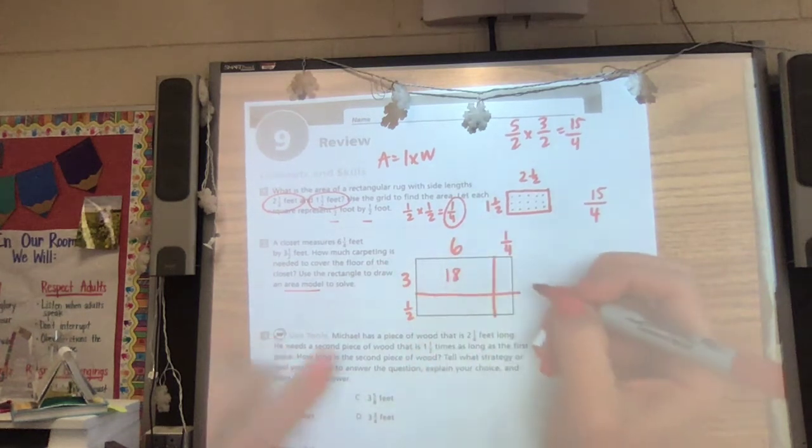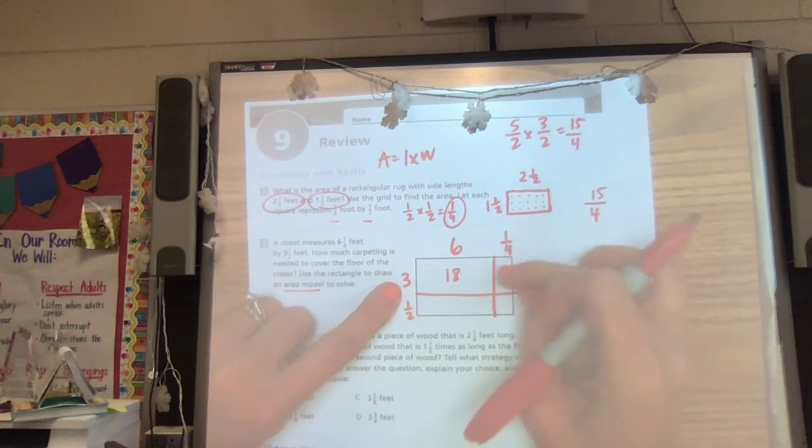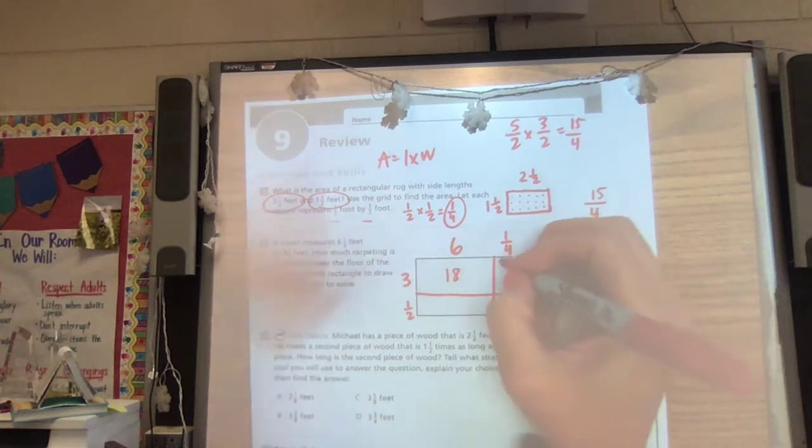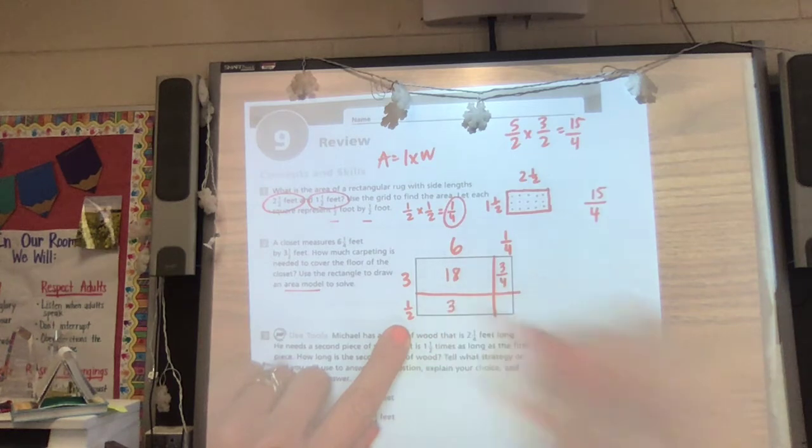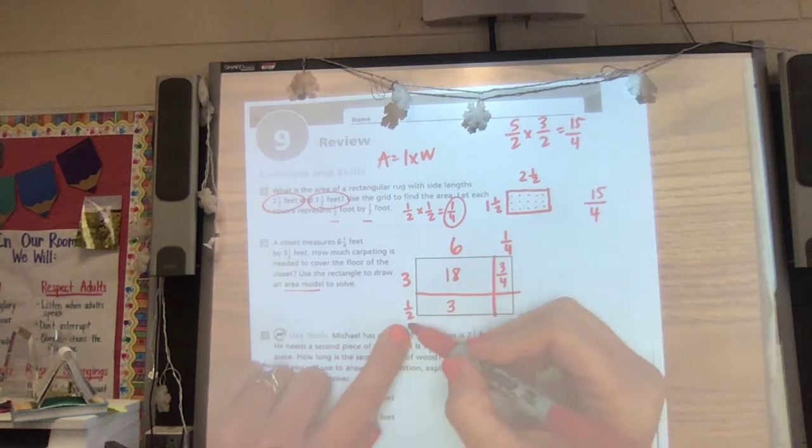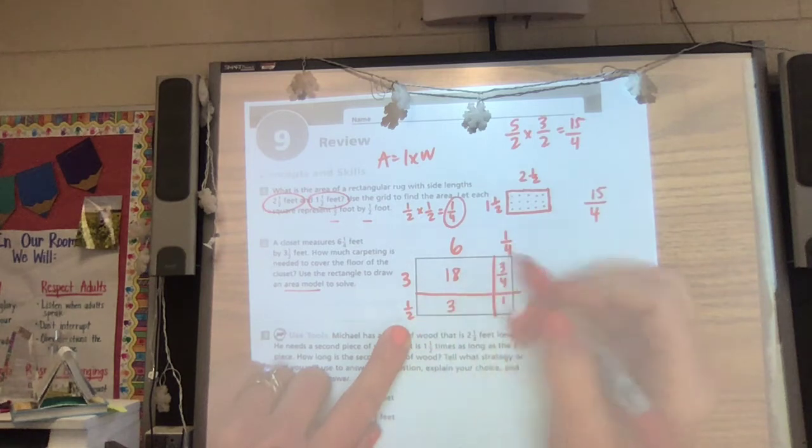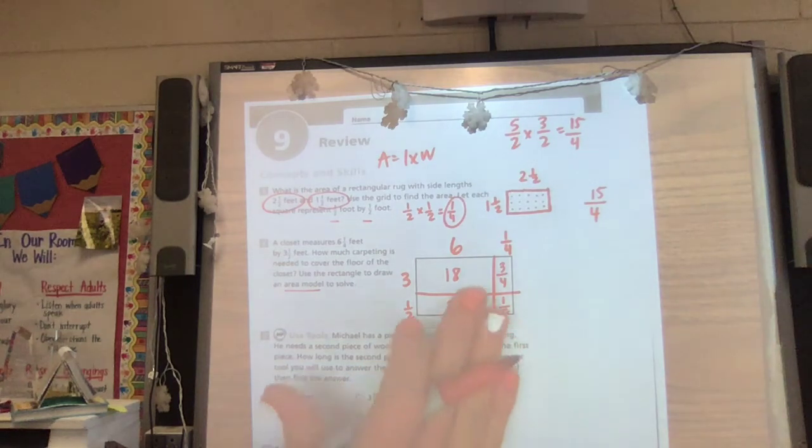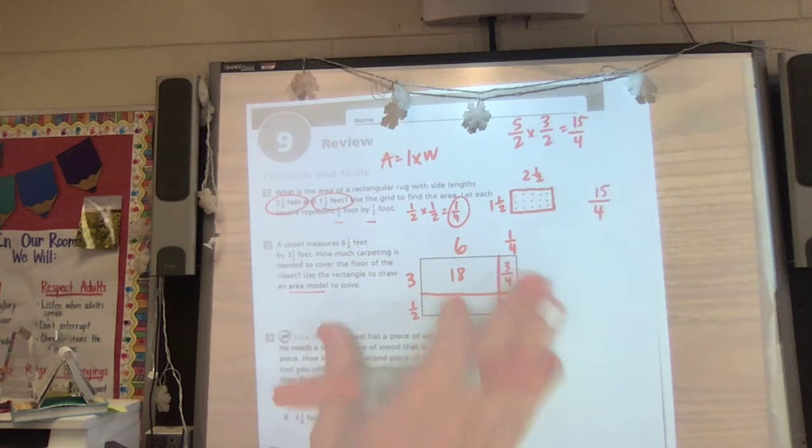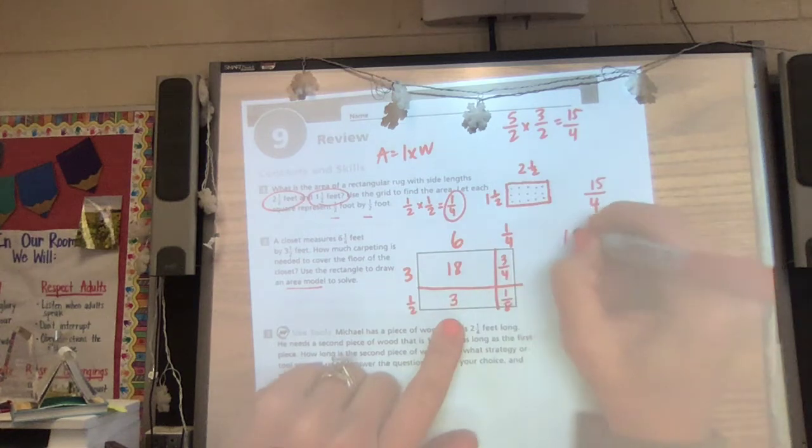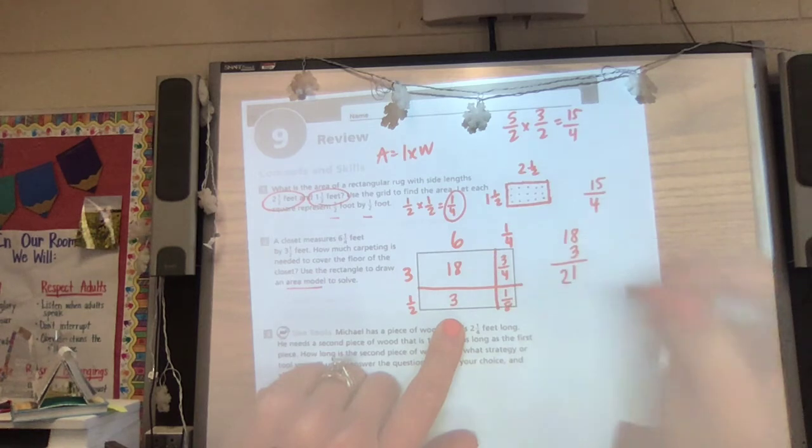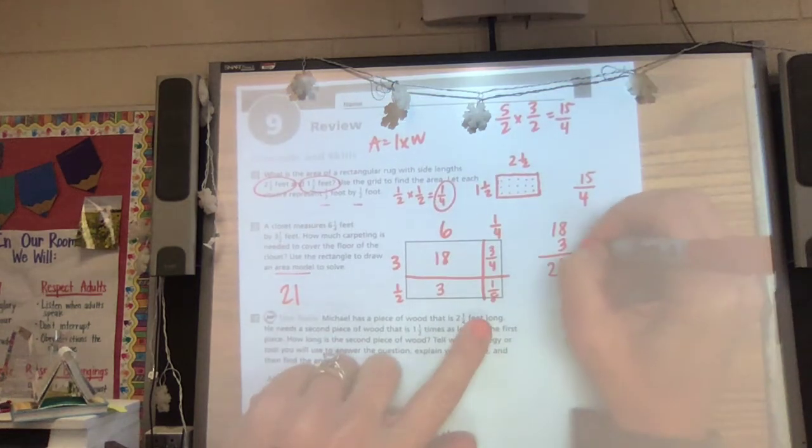Six times three is 18. Then we're multiplying three times the fourth. Well, I know a fourth three times is going to be three fourths. Six times a half. I know half of six is three. And then a fourth times a half. One times one is one. Two times four is eight. But whenever we have it this way, and again, this may not be the way you choose to do it. But we are going to need to recognize this like I've told y'all so many times. So we've got 18 plus three is 21.